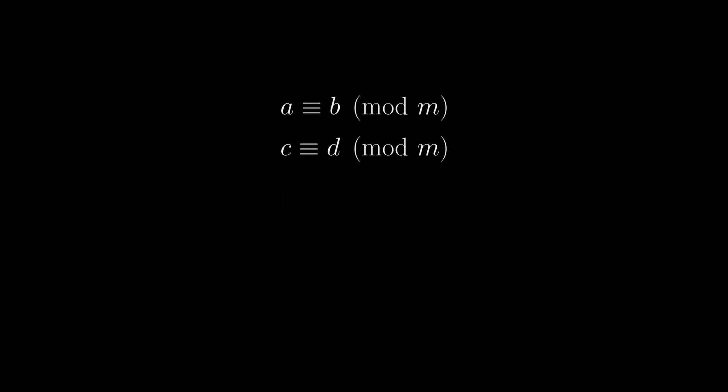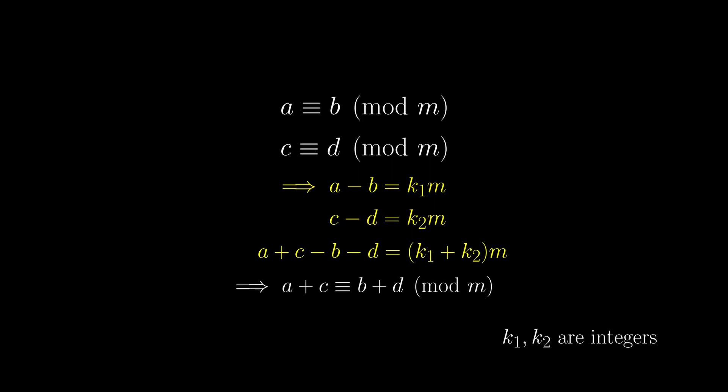If we have a congruent to b and c congruent to d modulo m, that means the difference between a and b, and that between c and d are divisible by m. So a plus c minus b minus d is divisible by m. And hence, a plus c is congruent to b plus d modulo m. So we can do addition for this notation.